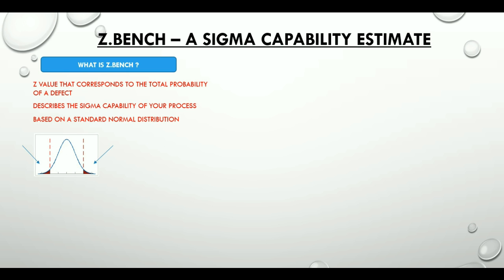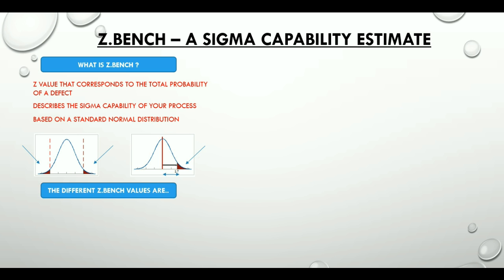Now if we put all the defects on the right tail of the distribution and measure the number of standard deviations from the center to the point that defines the total defects, we obtain the ZBench value.